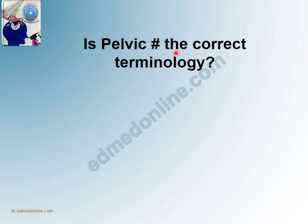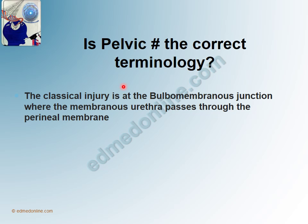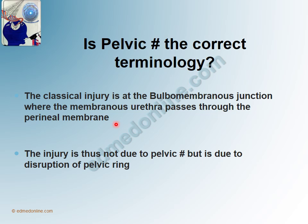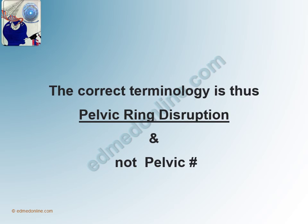There has been recent debate regarding whether 'pelvic fracture' is the correct terminology. The classical injury of posterior urethral trauma occurs at the level of the bulbomembranous junction, where the membranous urethra passes through the perineal membrane — which is away from the site of the fracture. This means the injury tends to occur because of a shearing force, and is thus not due to a fracture per se, but due to disruption of the pelvic ring, which is made up of bones as well as ligaments.